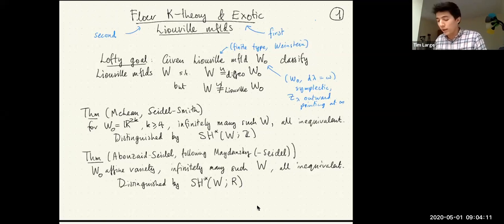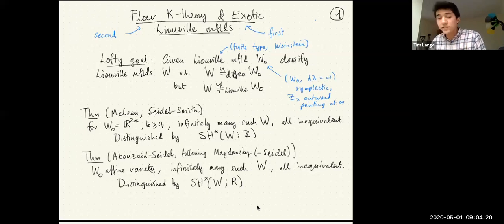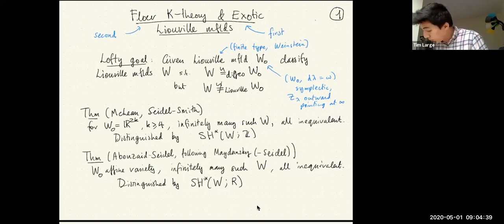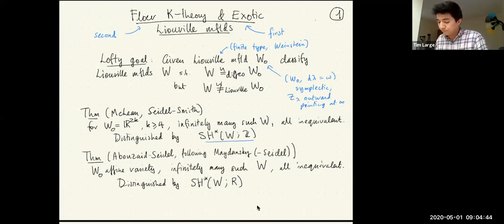For context, there is a result — historically first due to Seidel-Smith and then expanded by Mark McLean — which says that if you take W0 to be Euclidean space R^{2k} with its standard symplectic structure, there are infinitely many such W which are all diffeomorphic to Euclidean space but not symplectomorphic, and they're all not symplectomorphic to each other. These are all distinguished by symplectic cohomology with coefficients in the integers.